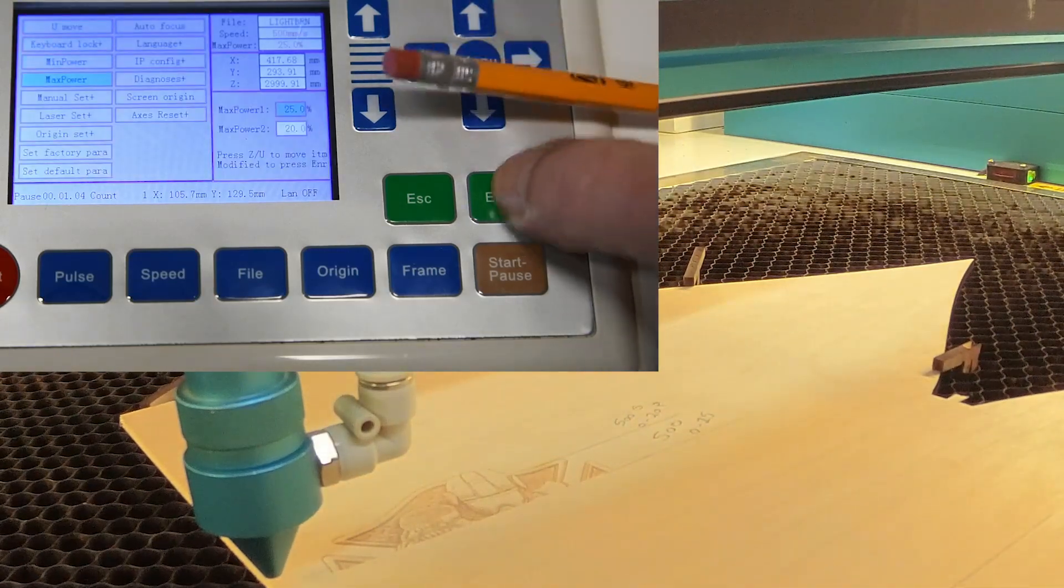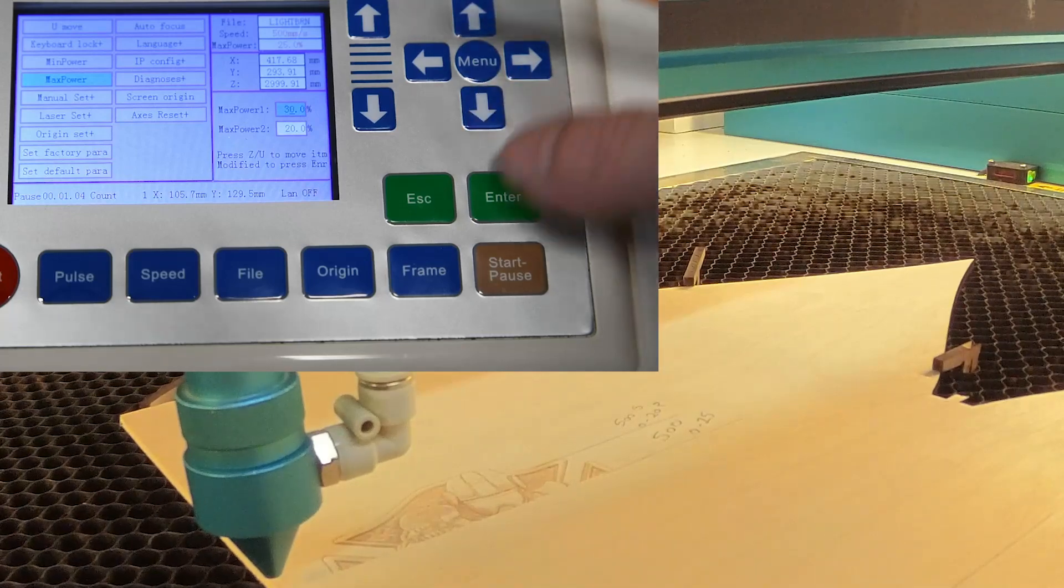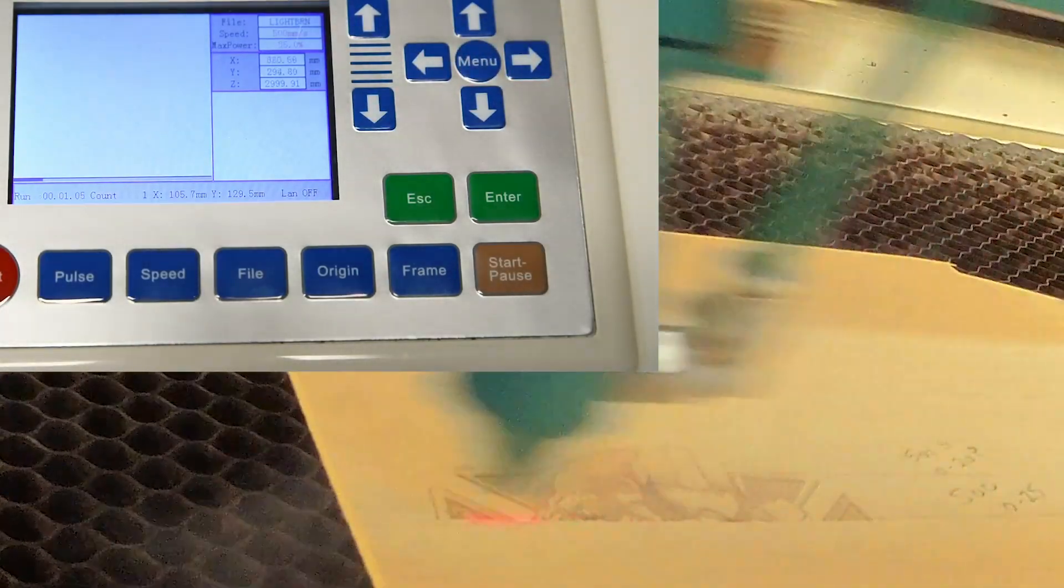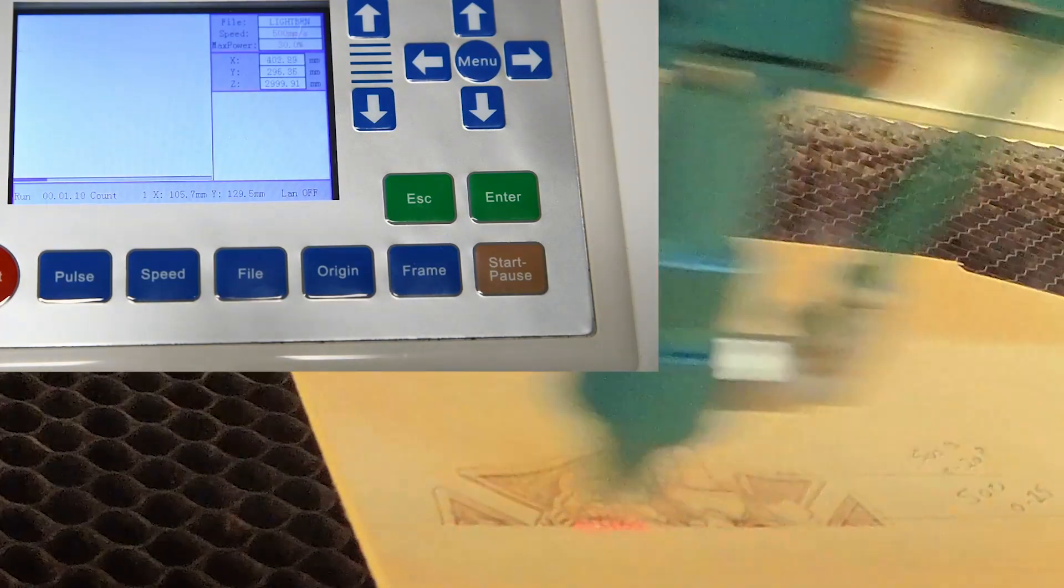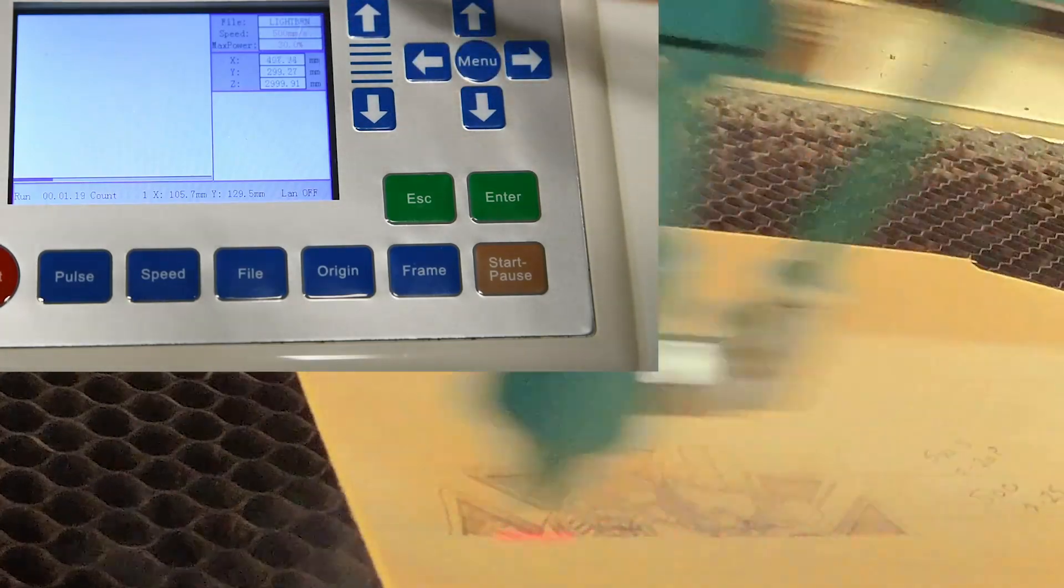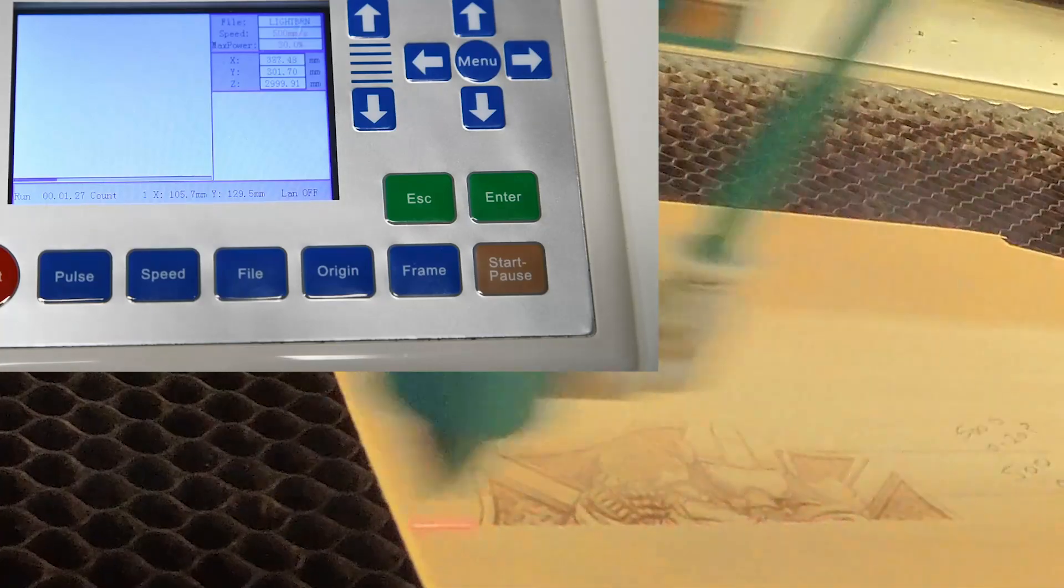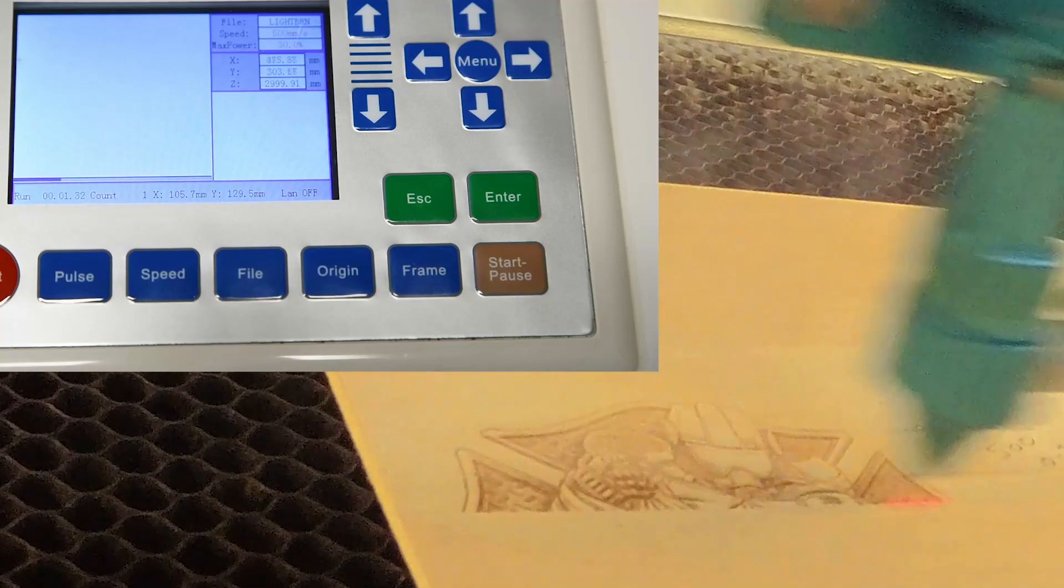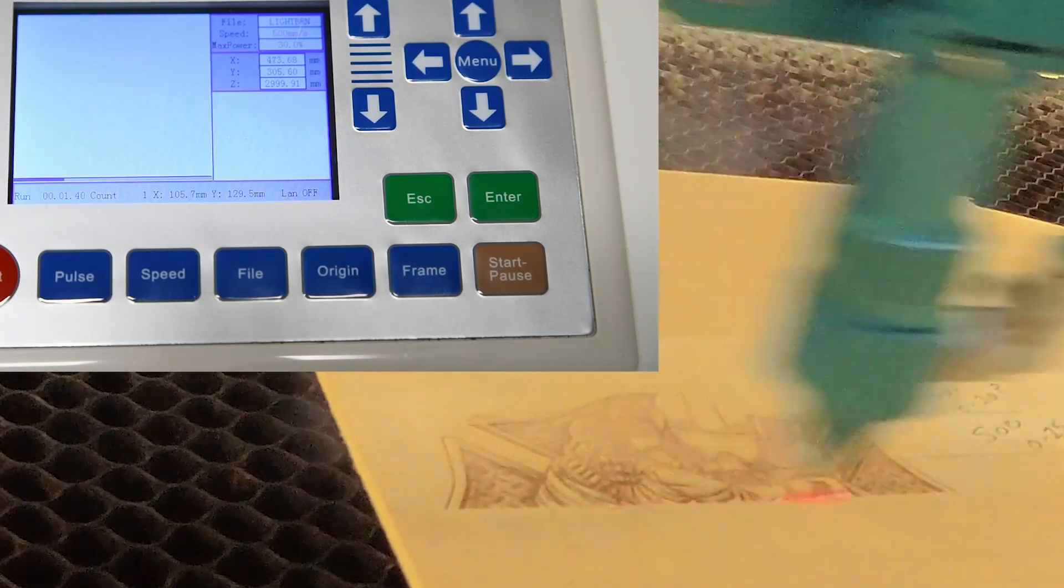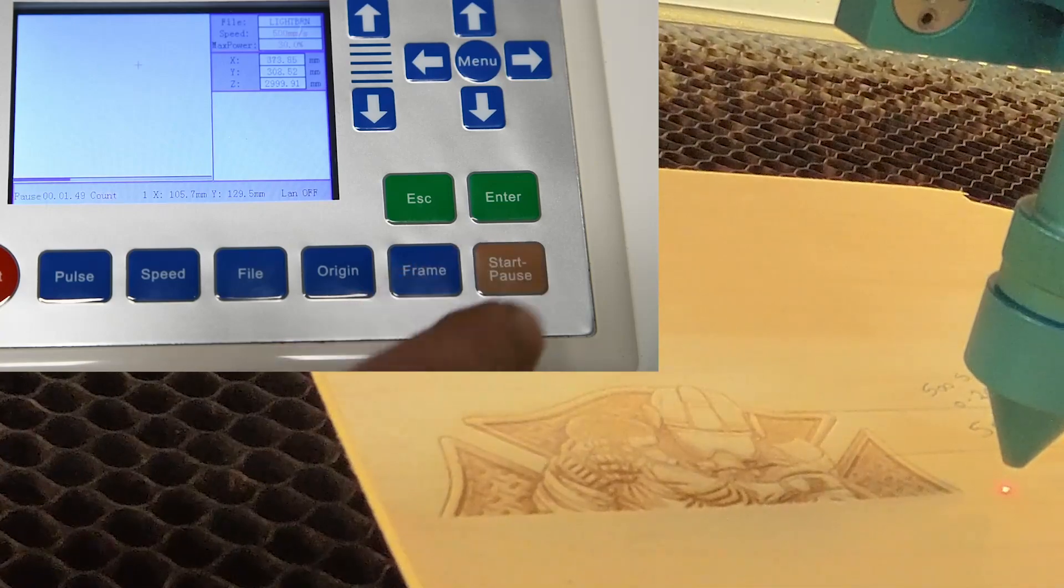Then you just want to go maximum power again, change it using the arrows again. And now you can see it getting darker. You can see up the top there, it's where your power and speed settings are. It's getting a bit closer to looking good.